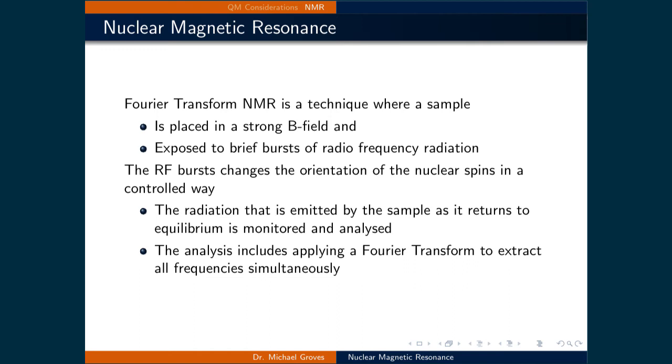These bursts change the orientation of the nuclear spins in a controlled way. The radiation that is emitted by the sample as it returns to equilibrium is monitored and analyzed by applying a Fourier transform to extract all frequencies simultaneously.